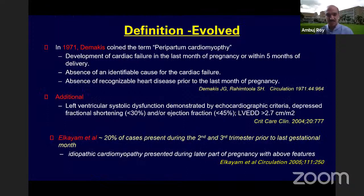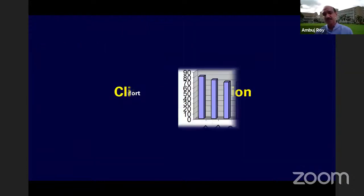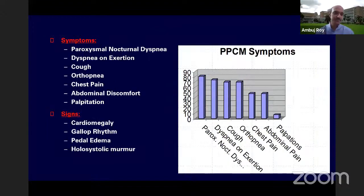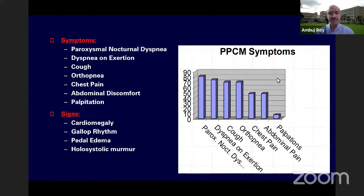Symptoms and signs of PPCM overlap with normal pregnancy, such as fatigue due to anemia or cardiovascular overload. Watch for orthopnea and classical signs of heart failure including cardiomegaly and gallop rhythm. Severe cases can present with cardiogenic shock, multi-organ failure, or arrhythmias — supraventricular, ventricular, or even sudden cardiac death. One of the more distinct features compared to other heart failures is thromboembolism, occurring in 10–17% of PPCM patients, with LV apex thrombus on initial echo.